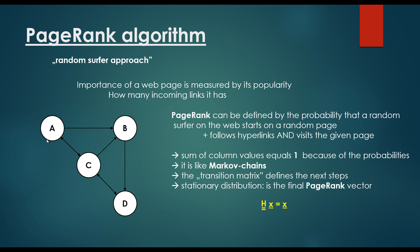So for example, if a given random surfer starts on the web page A, it is able to visit page B and page C. With 1 divided by 2 probability, it's going to choose B, and with 1 divided by 2 probability, it is going to choose C. For example, it chooses B.